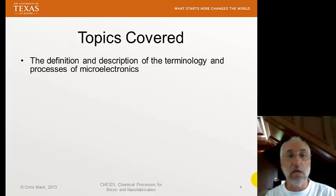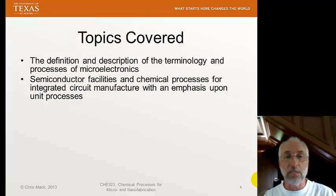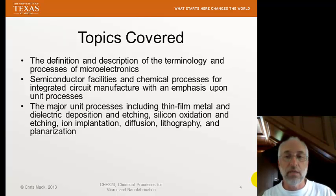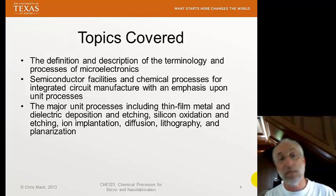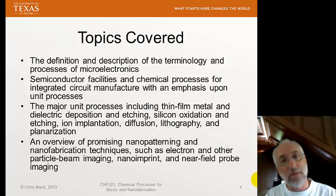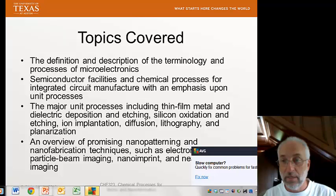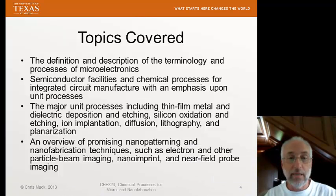Some of the topics we're going to cover include definitions and descriptions of the terminology and processes used in microelectronics. We'll talk about semiconductor fabs and chemical processes for IC manufacturing. We'll go through individual unit processes — things like metal deposition, dielectric deposition, etching, oxidation, ion implantation, diffusion, planarization, and quite a bit of material on lithography. The last one-third or 25% of the class will be an overview of some of the more promising new nanotechnology materials and processes.